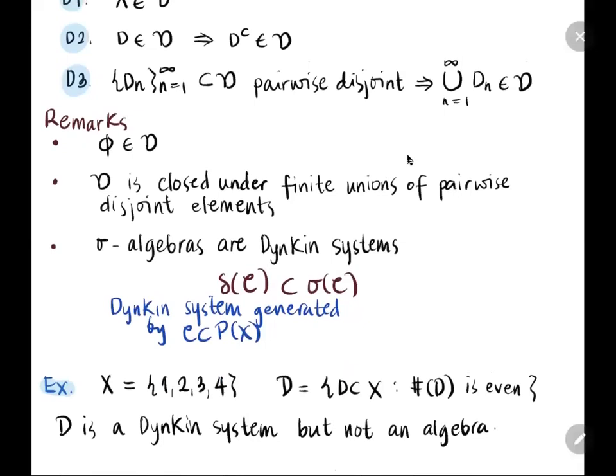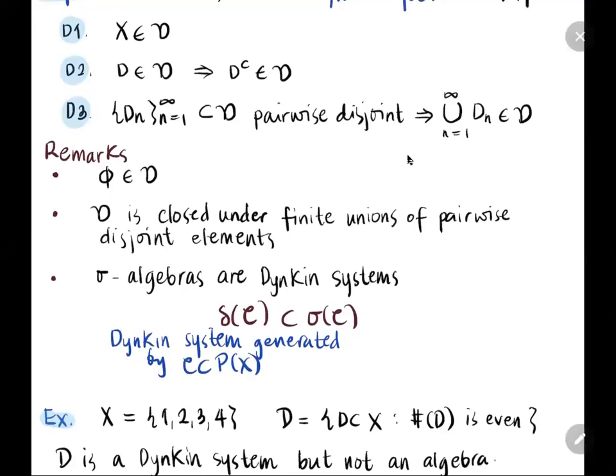To see that not all Dynkin systems are sigma algebras — in fact, there are Dynkin systems that are not even algebras — consider a set X having four elements: {1, 2, 3, 4}. Consider the collection D of all subsets of X with an even number of elements. D1 tells us that X must be in the collection. Since X has four elements, X is in D.